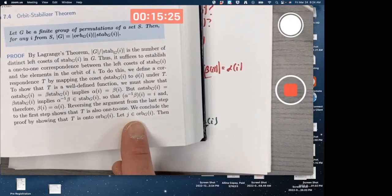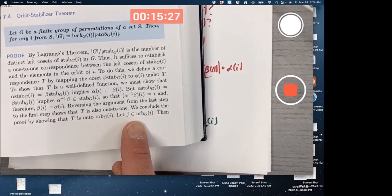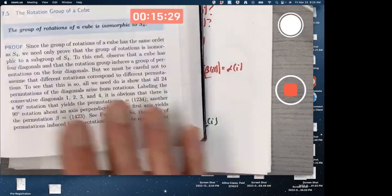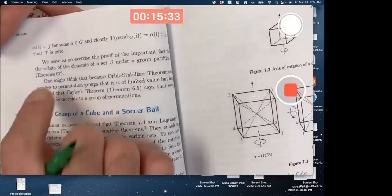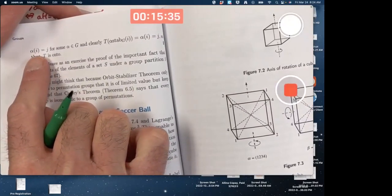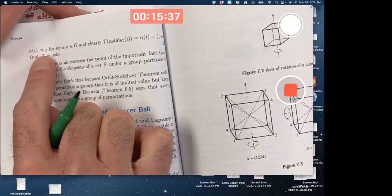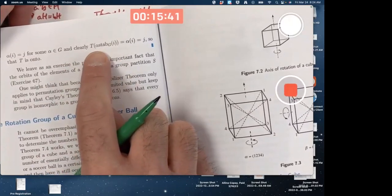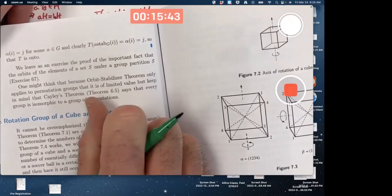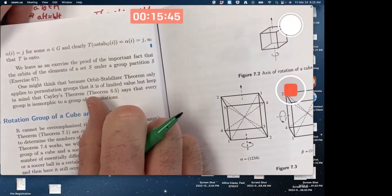What coset gets mapped to J under T? Well, since phi of I equals J it's probably phi H. Book uses alpha instead. There's some alpha where alpha of I equals J. Yeah, the formula for T then tells you that that left coset is what gets mapped down to J. So it's onto. It's a one-to-one correspondence.